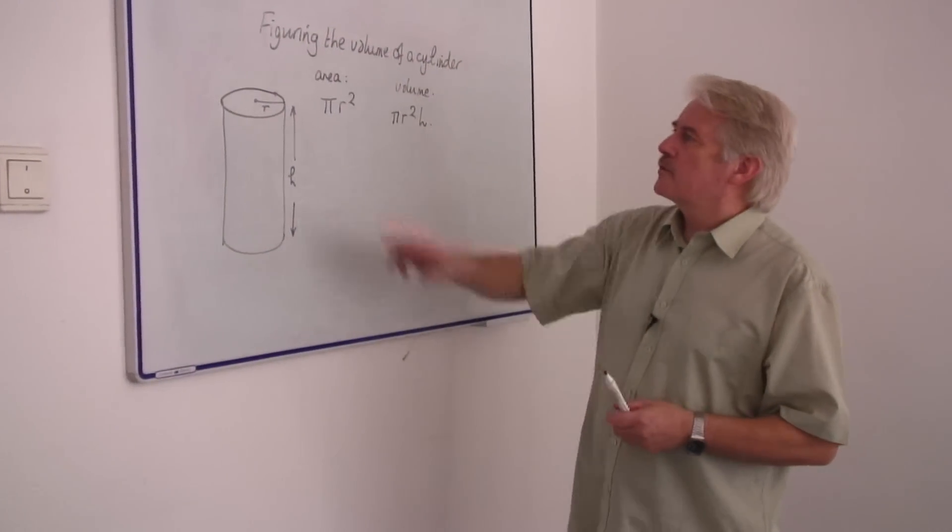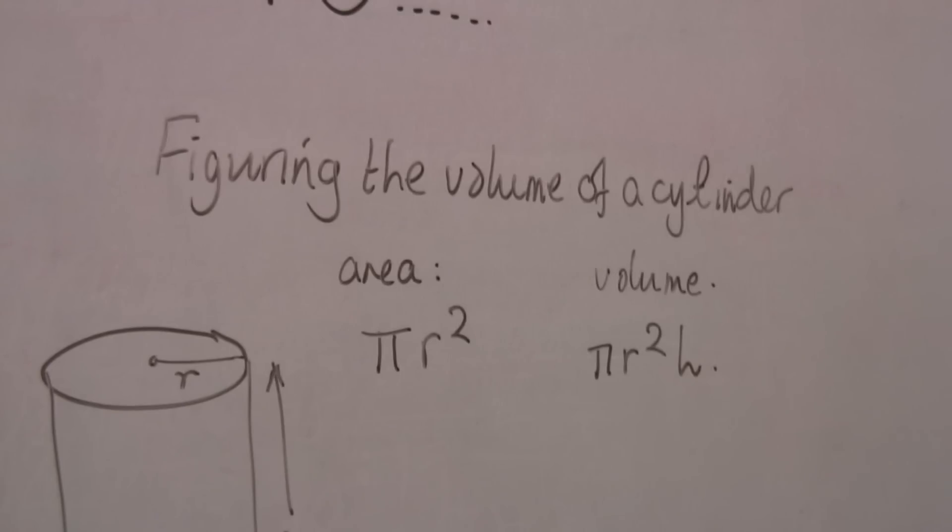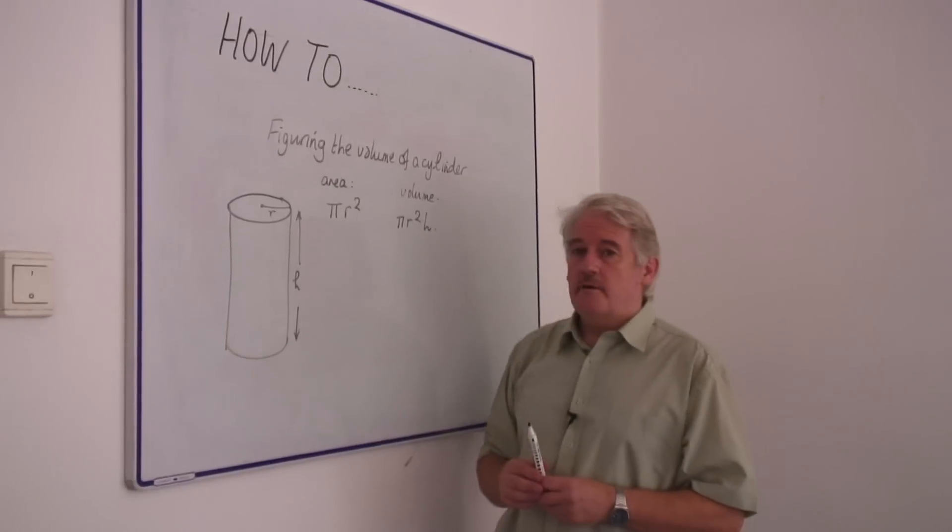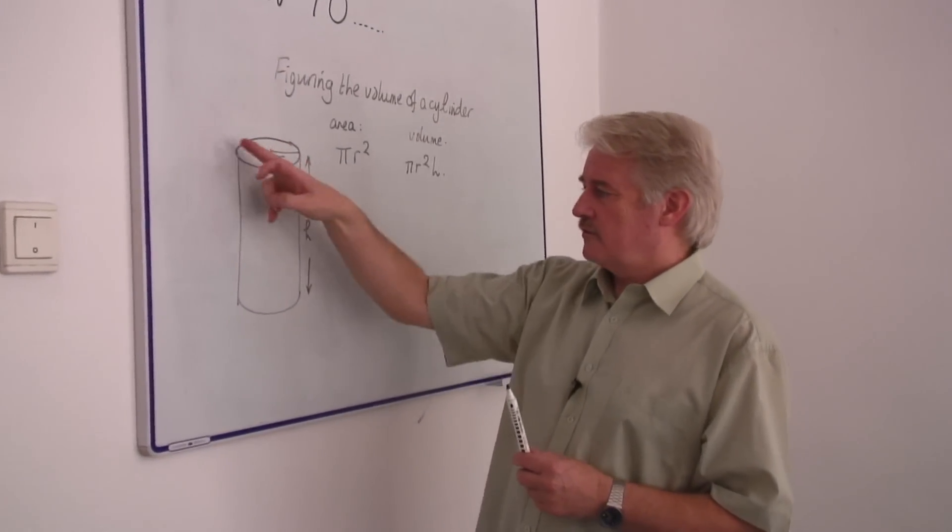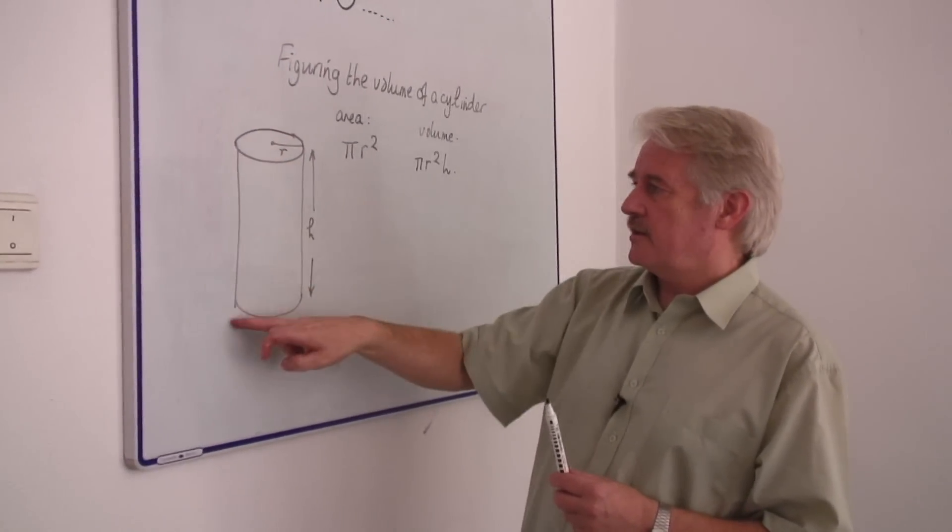Hi, I'm Steve Jones and I'm going to tell you how to figure the volume of a cylinder. Now remember a cylinder has a circular cross section and is uniform down its length.